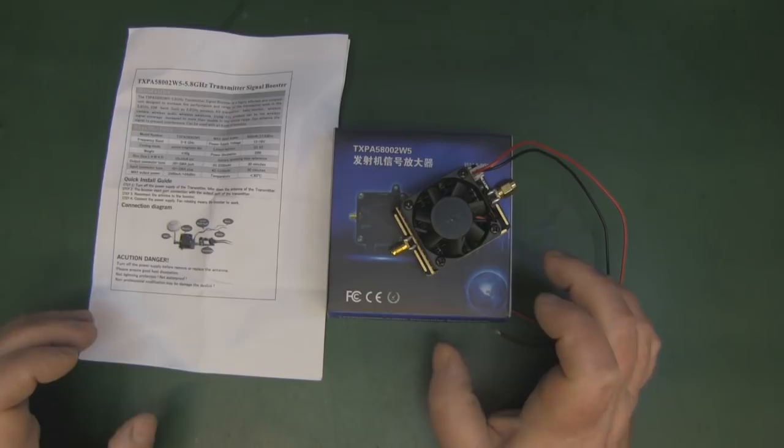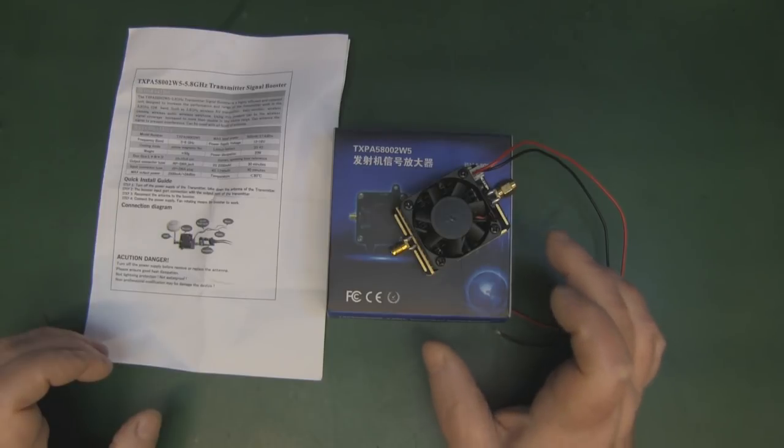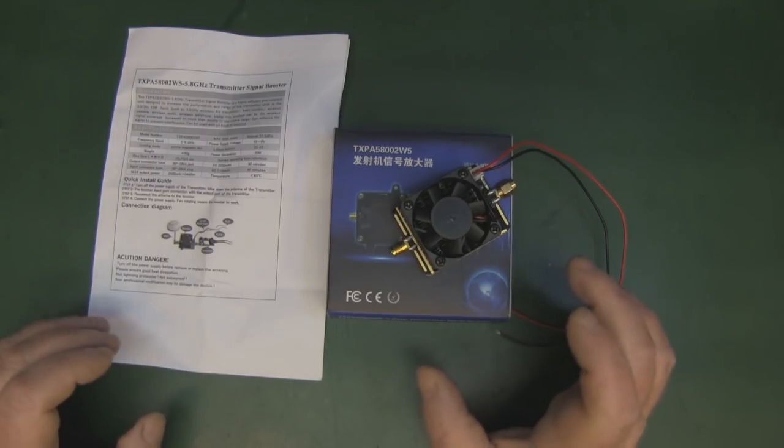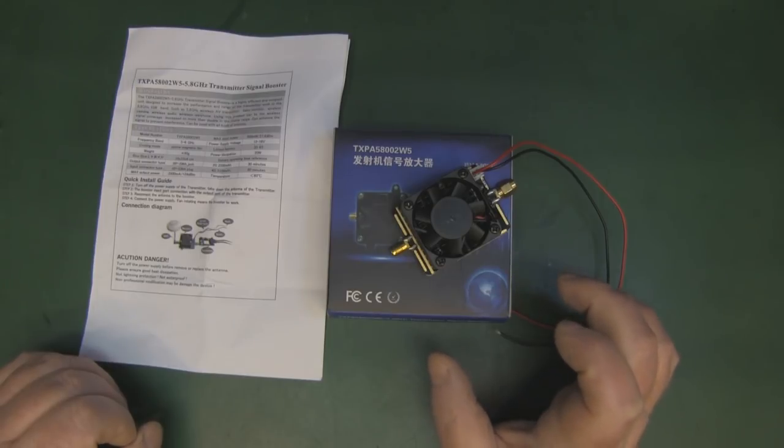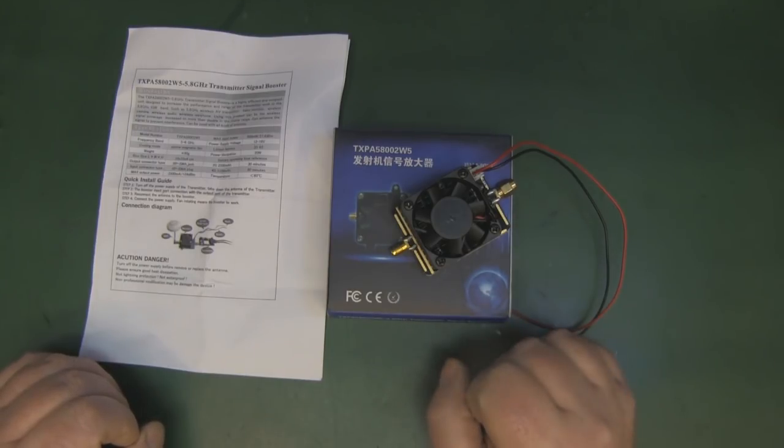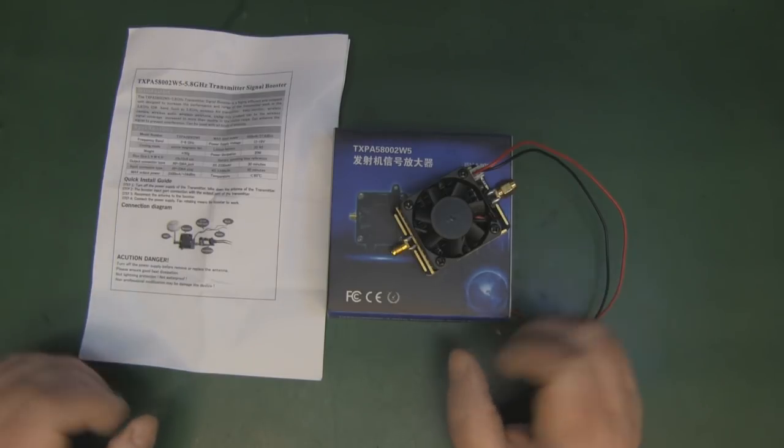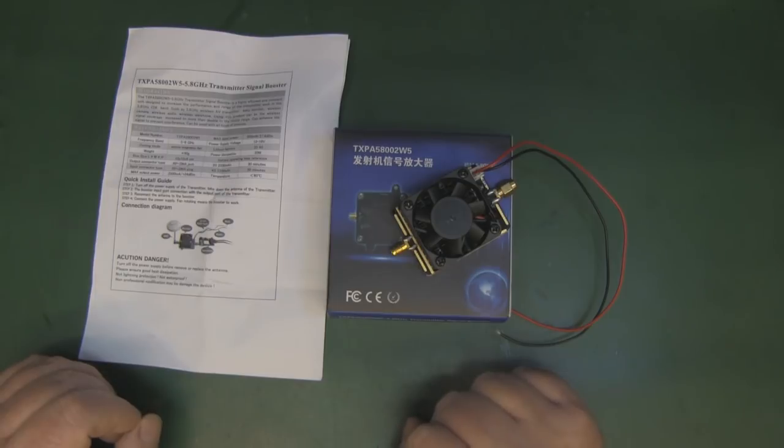The instructions say it's designed for FPV baby monitors. I wouldn't go using this on a baby monitor, there's no need to put that kind of power in a house. My concern with using it for FPV is the power this thing uses. You're going to have to run this on a separate battery, so you need to take weight into consideration and the running time.